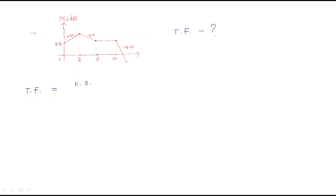In the previous problem, the initial slope was 0, so there was no pole or zero at the origin. But here we have +20 dB, so we have a zero at the origin. If it were -20, we would have a pole at the origin. After that, we see a slope change of -40 dB at corner frequency 2. A change of -40 means two poles are added, written as (1 + s/2) squared.